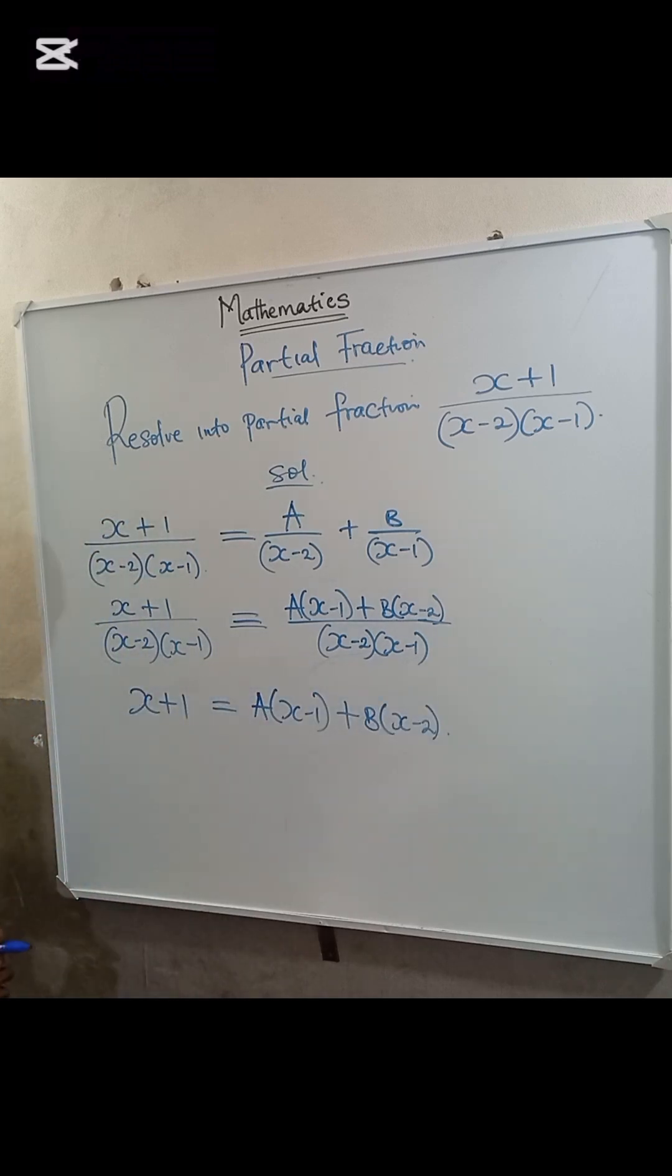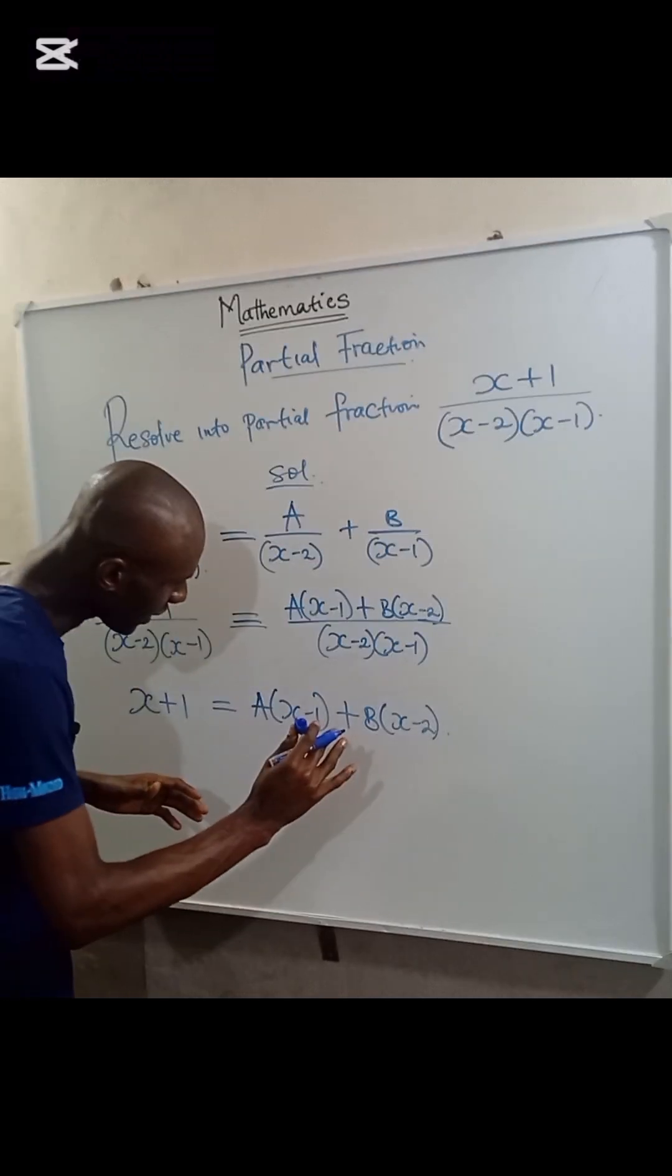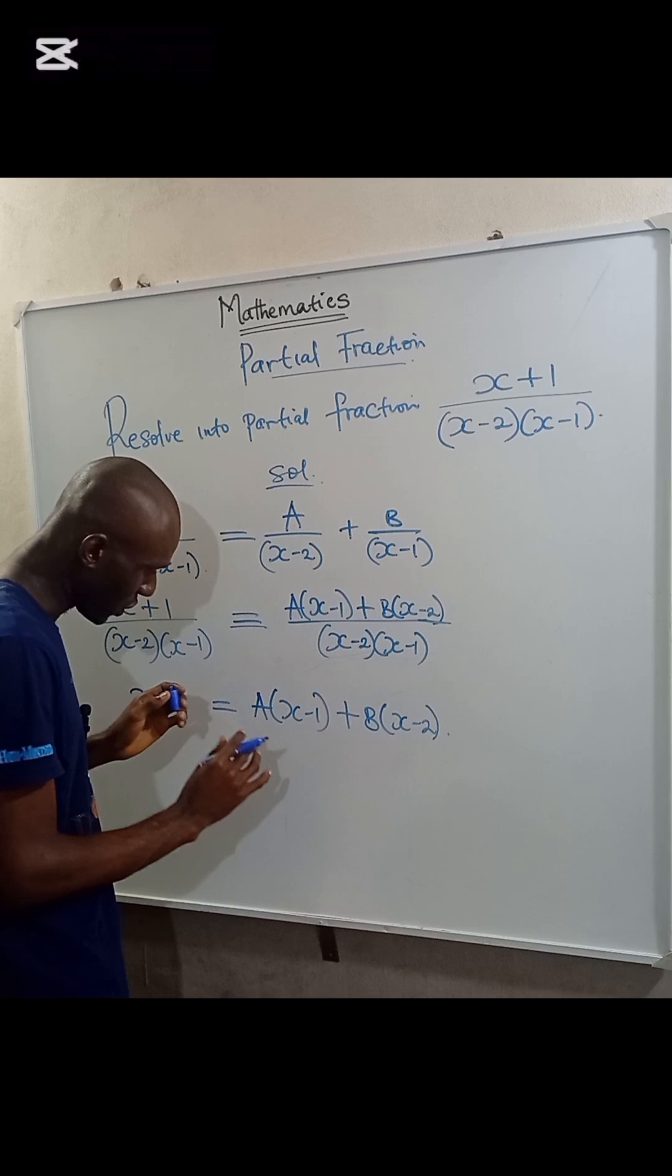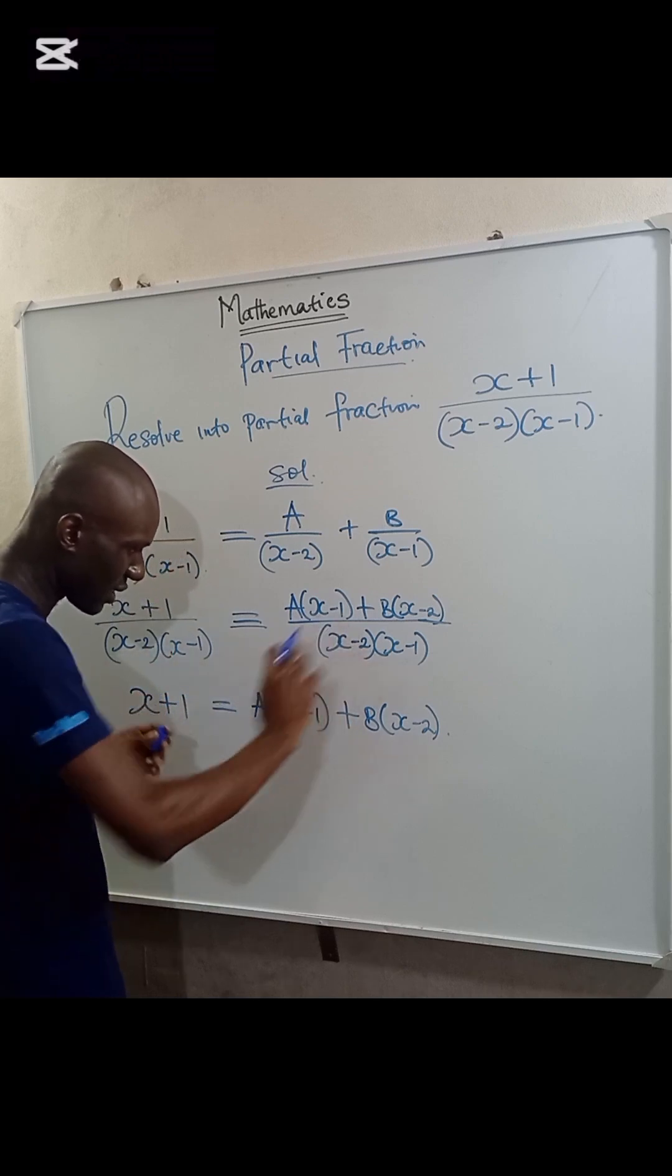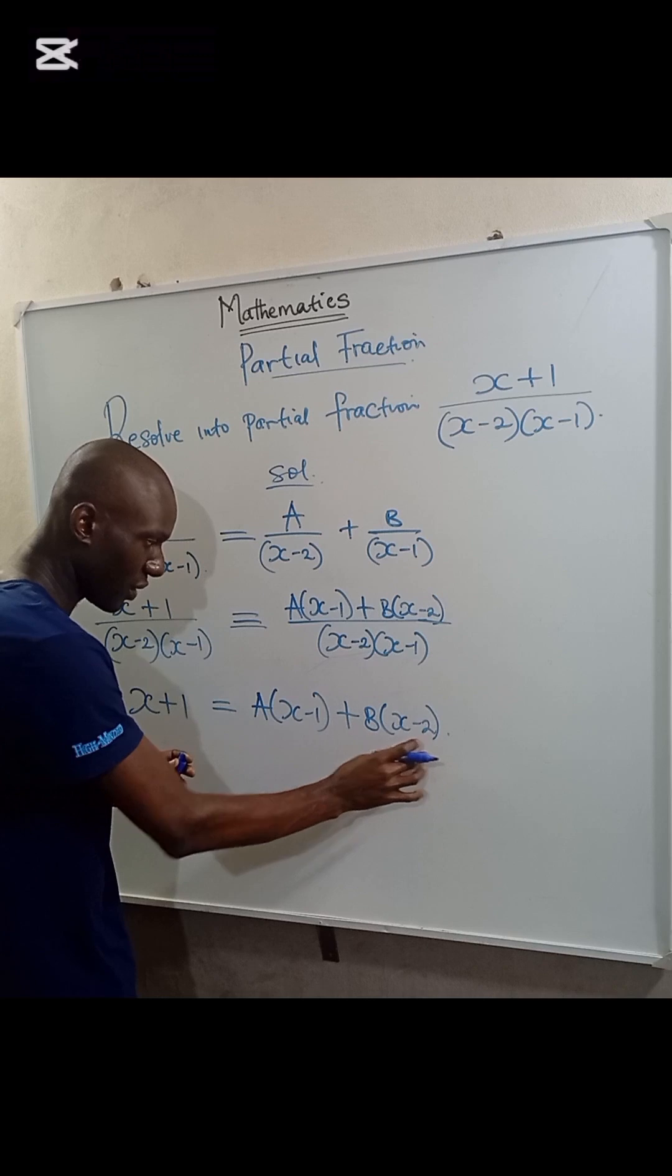Now we have to obtain the values of A and B. Very simple. If you look at the right-hand side, if I substitute X equal to 1, I will eliminate A and I can be able to find the value of B.